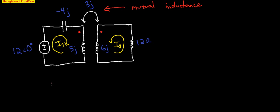Going around our first loop, we put all the rises on one side. So we have 12 is our rise. And then capacitor and inductor both absorb energy, so these will be drops. So 12 equals negative 4ji1 plus 5ji1. And now to handle the mutual inductance, we need to add it in our equation. So plus 3j times I2.